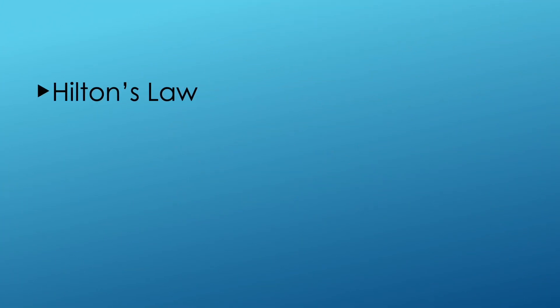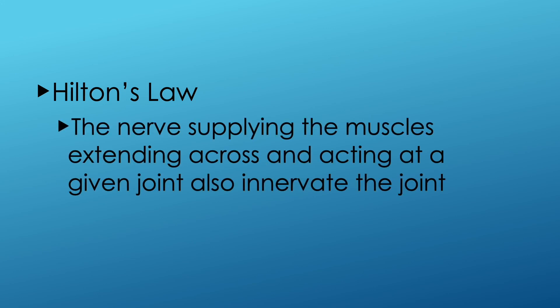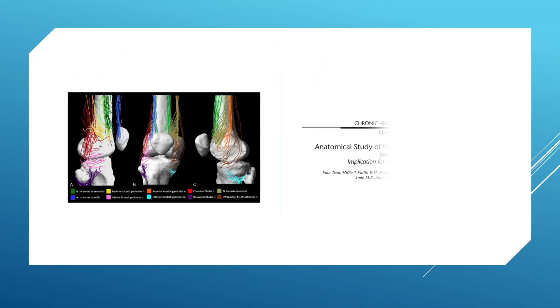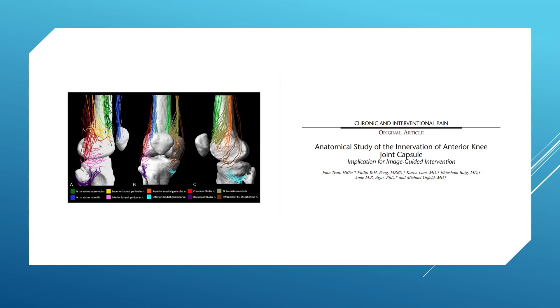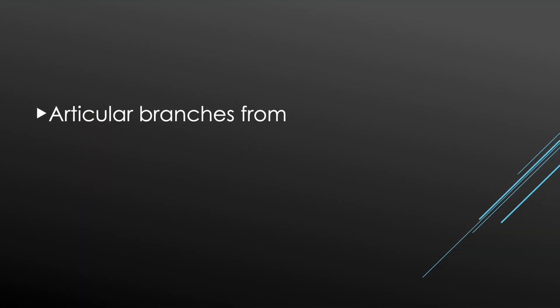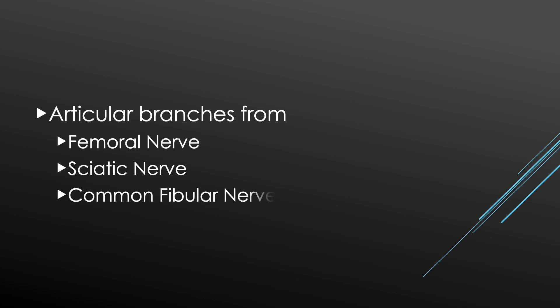There is a simple rule for understanding the articular branches: the nerve supplying the muscles extending across and acting at a given joint also innervates the joint. Articular branches of the knee joint originate from the femoral nerve, sciatic nerve, and common fibular nerve.